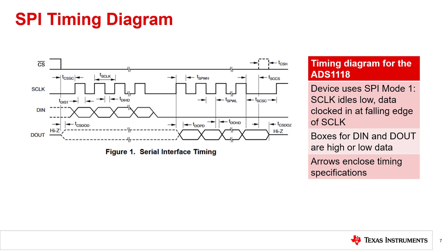We can go through the specifications and explain how to read them. The timing diagram shows specific timing requirements between the different digital lines. For all digital communications, this timing must be followed or the device may not recognize commands, fail to understand the configuration settings, or properly output data.